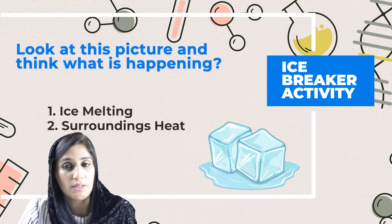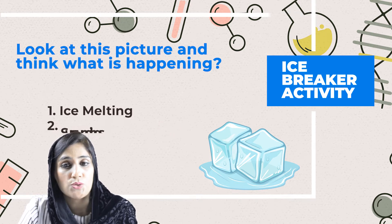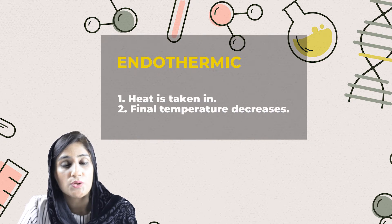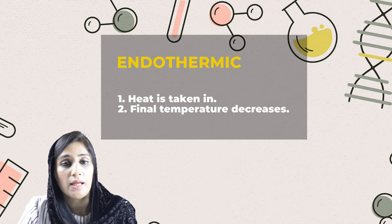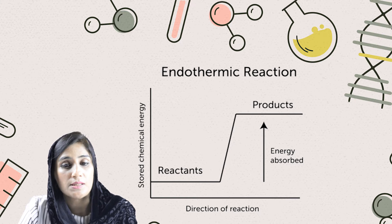We can clearly see that ice is melting due to the surrounding heat. In the coming slides we will explore what is causing this ice to melt. This ice is melting due to the endothermic process. The word endothermic is composed of two words: endo and thermal. Endo means internal or within, and thermal is related to heat. So endothermic is the one in which heat energy is taken in and the final temperature drops down, as shown in this diagram.